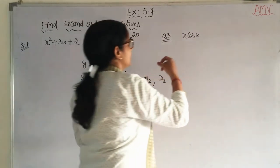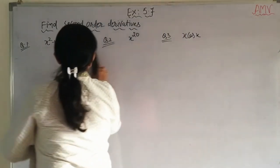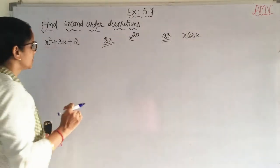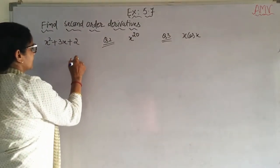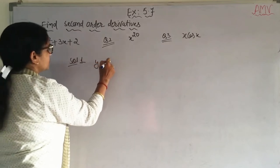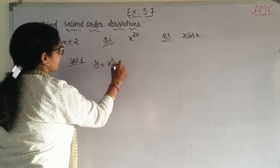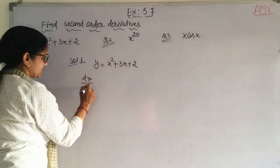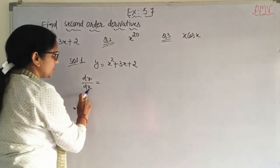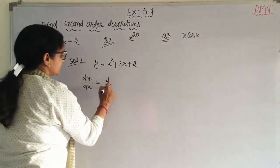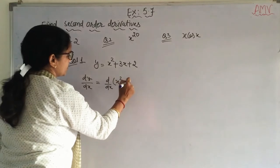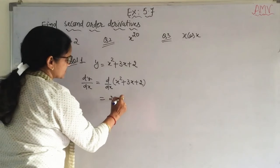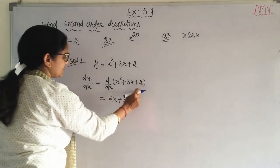Now I am starting the questions. Question number 1: y = x² + 3x + 2. First, let y = x² + 3x + 2. Differentiating with respect to x to find dy/dx: d/dx of (x² + 3x + 2) gives 2x + 3. Derivative of the constant 2 is 0.